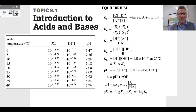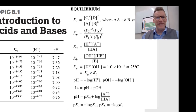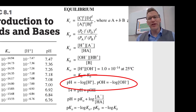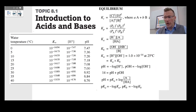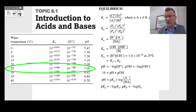Keep in mind, topic 8.1 is going to center on just a couple of equations on your equation sheet. The pH equals negative log of the H+, the pOH equals negative log of the OH−, and the Kw is equal to the H+ times the OH−, which equals 1×10⁻¹⁴. But remember, that's only at 25°C and in pure water. In pure water, water has a pH of 7, a pOH of 7, and a pKw of 14.